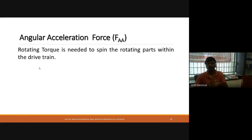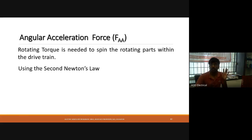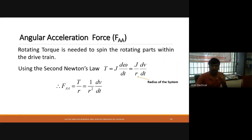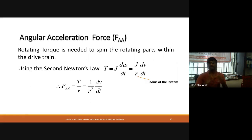Next is angular acceleration. Since we are using a motor and rotating parts, the torque is equal to J times dω/dt. Since speed equals velocity divided by radius, we can write the angular acceleration force as (J/r) × (dv/dt). Angular acceleration force is also present only when there is a rate of change of velocity with respect to time, and it is also an aiding force.